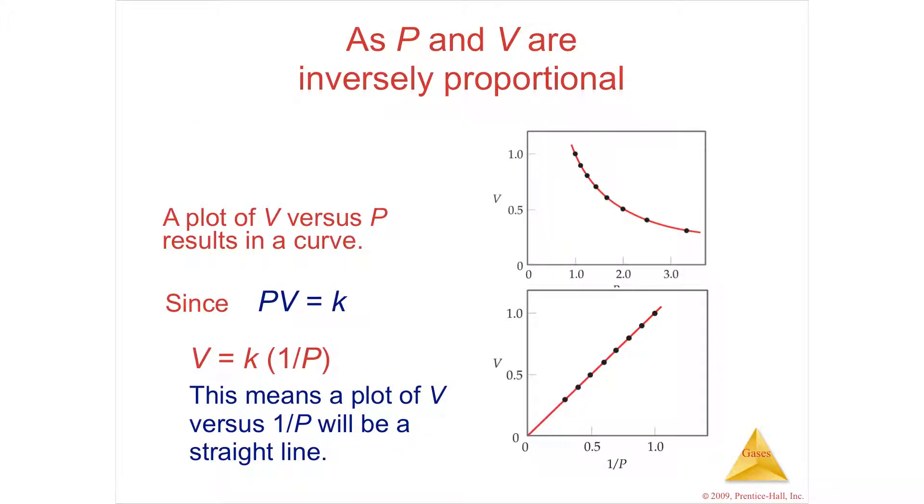So an inverse relationship is going to always have a curved line. So as one goes up, the other goes down. So let's look here. As volume goes down, okay, as volume goes down, the pressure is going to go up. That's why you can't have a straight line.